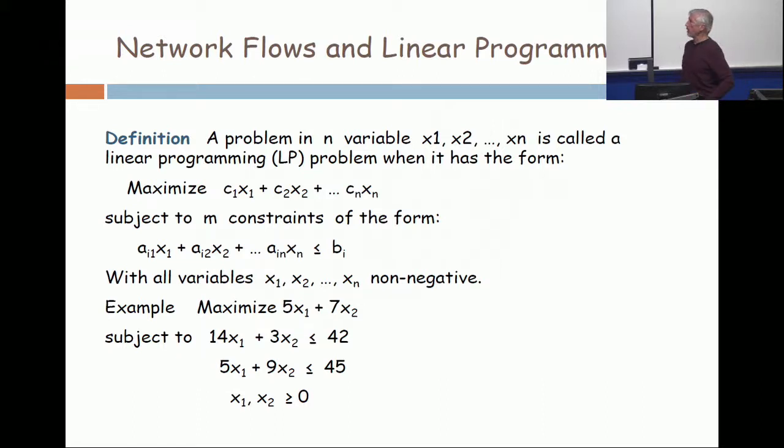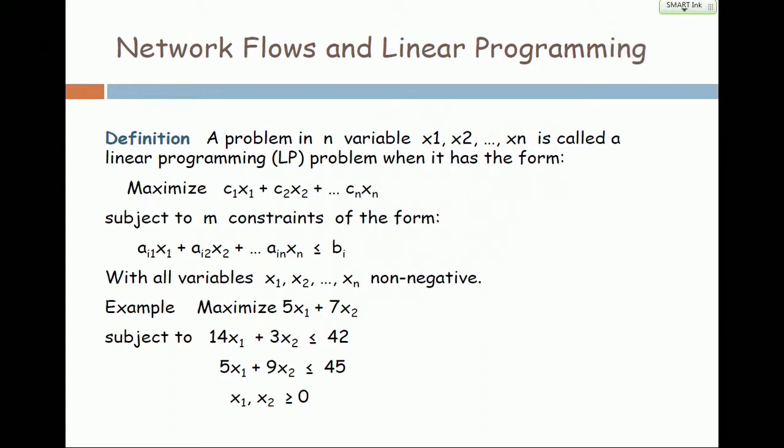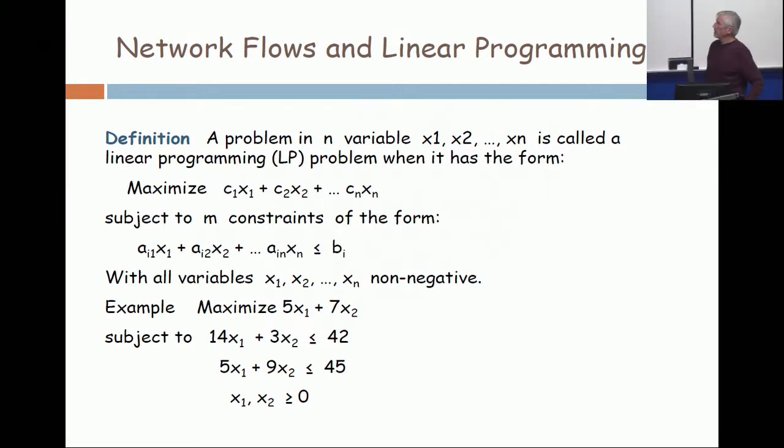Now, let's connect network flows with an important area of optimization called linear programming. A linear programming problem has n variables, x1, x2, up to xn. And it's called a linear programming problem when it has the following form.